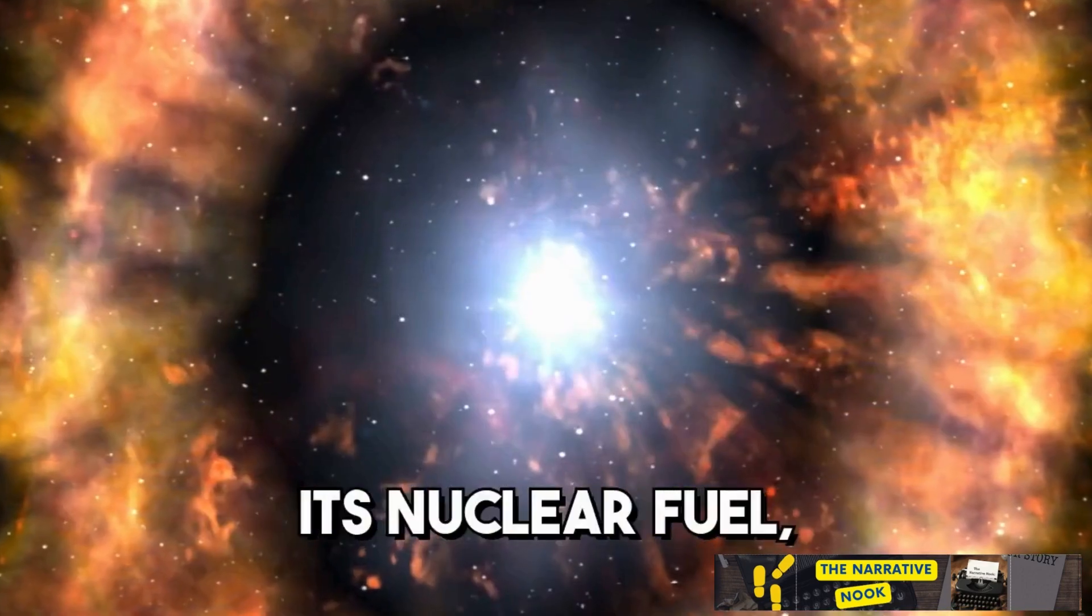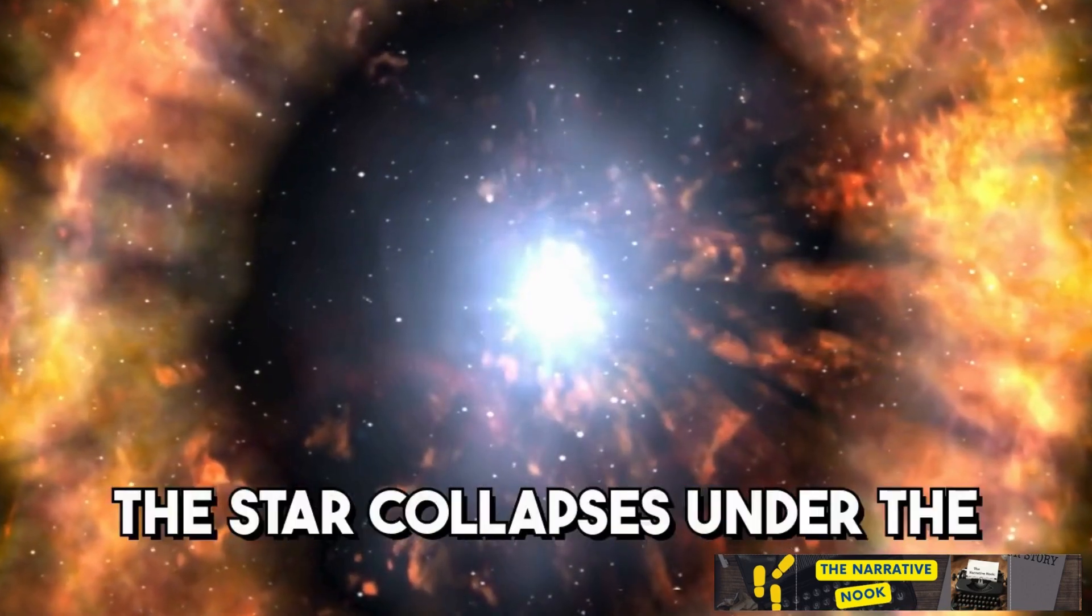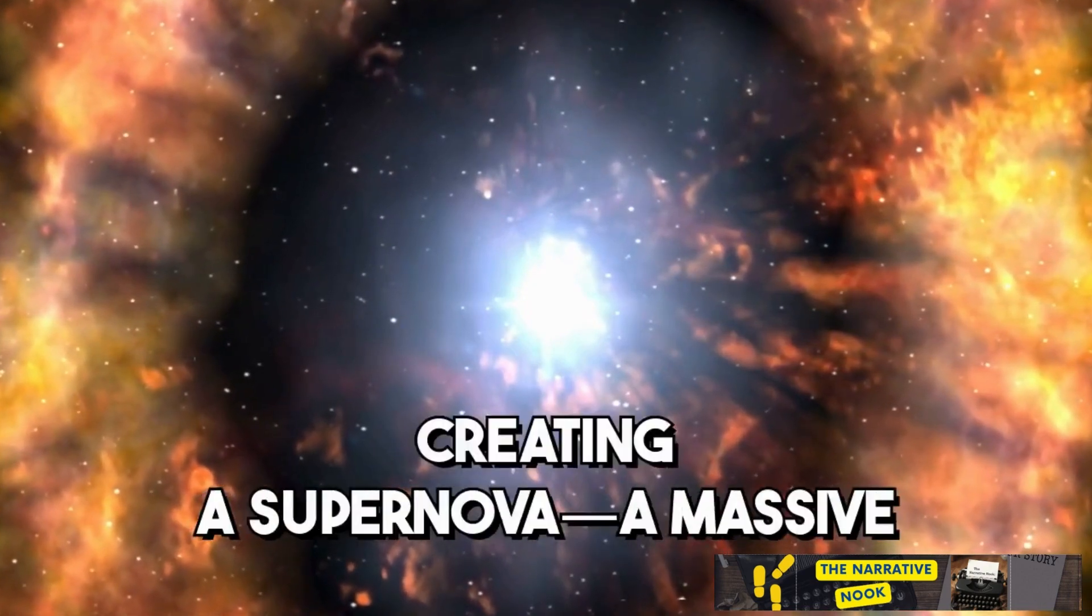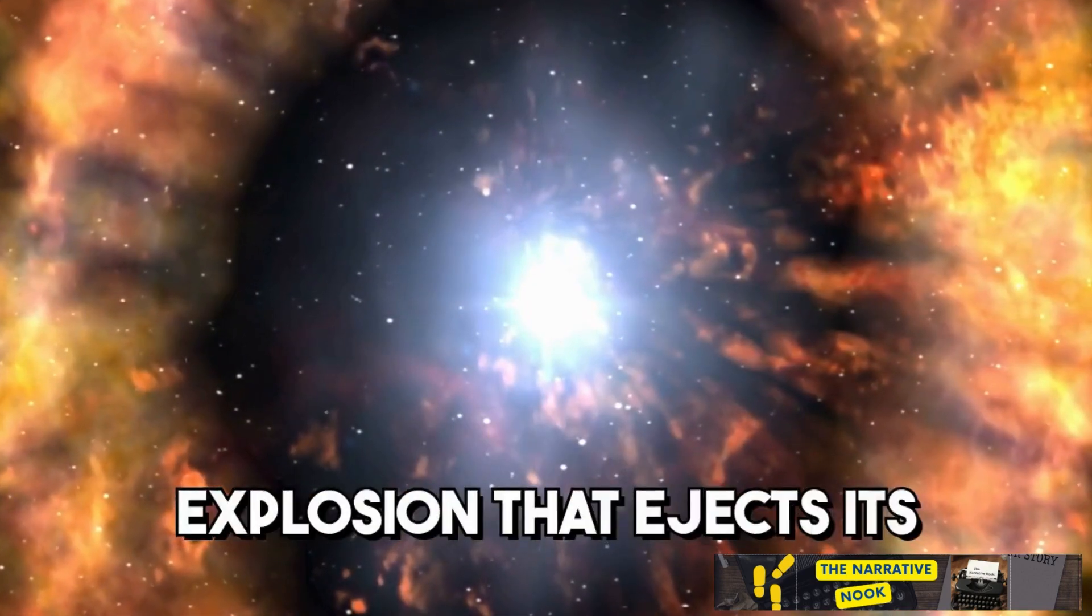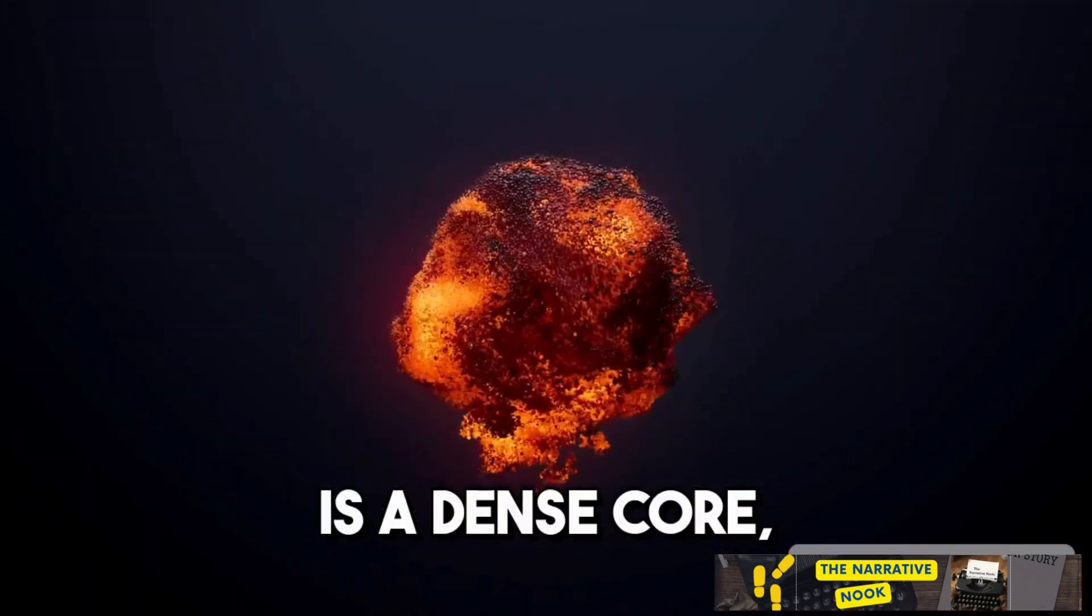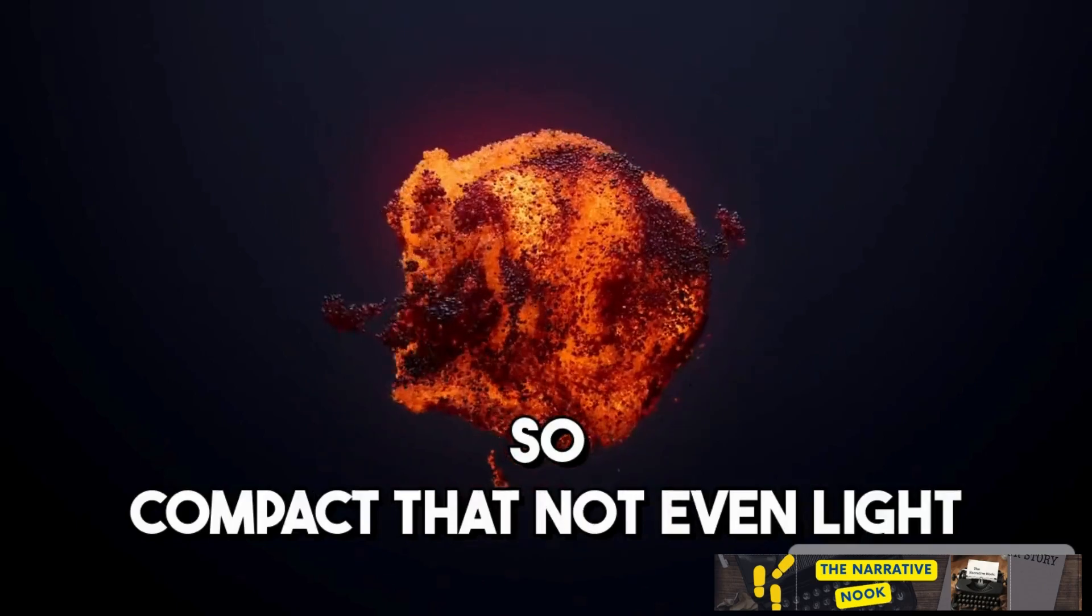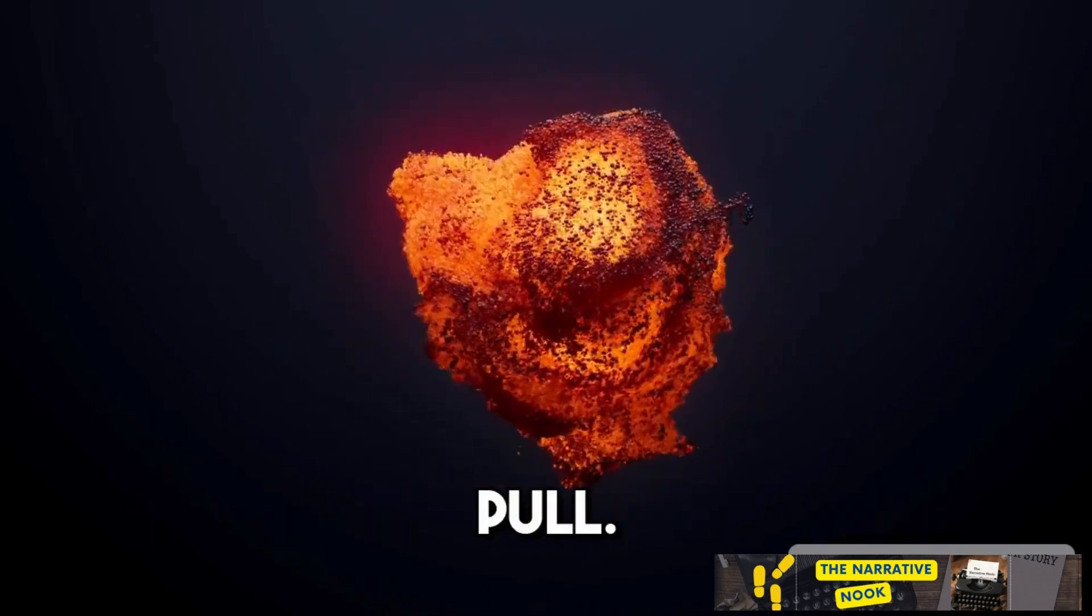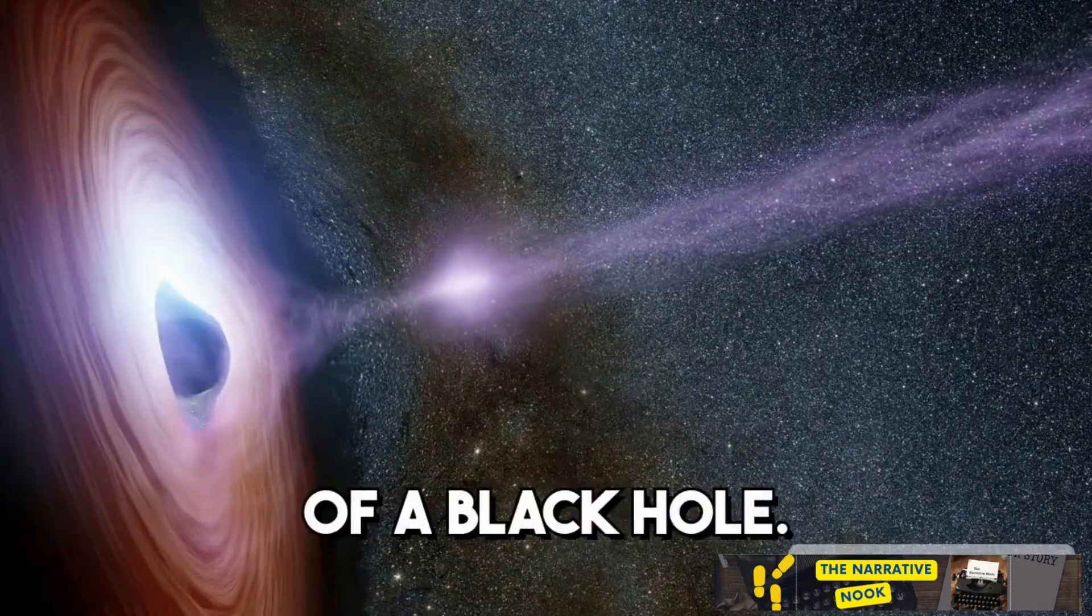After burning through its nuclear fuel, the star collapses under the force of its own gravity, creating a supernova, a massive explosion that ejects its outer layers into space. What's left behind is a dense core, so compact that not even light can escape its gravitational pull. This is the birth of a black hole.